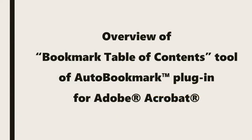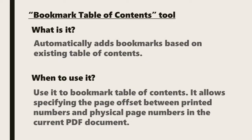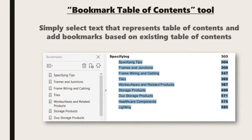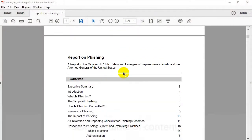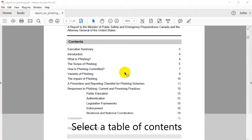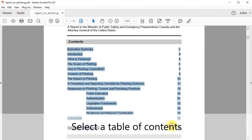Now we'll look at an overview of the Bookmark Table of Contents tool in the Auto Bookmark plugin. This tool automatically adds bookmarks based on an existing table of contents. Bookmarking these tables of contents allows for specifying the page offset between printed numbers and physical page numbers in the open PDF document. The tool works by selecting text that represents the table of contents to add bookmarks based on this data. Begin by selecting the table of contents and highlighting the appropriate text.